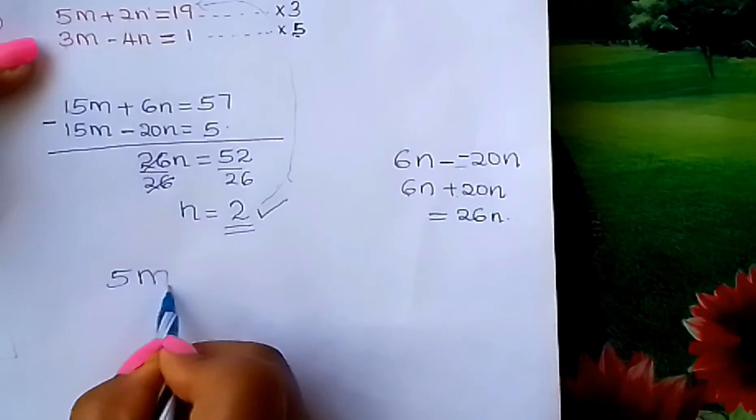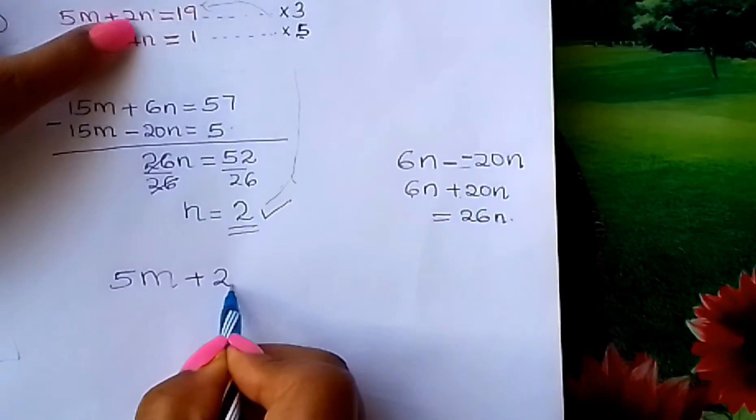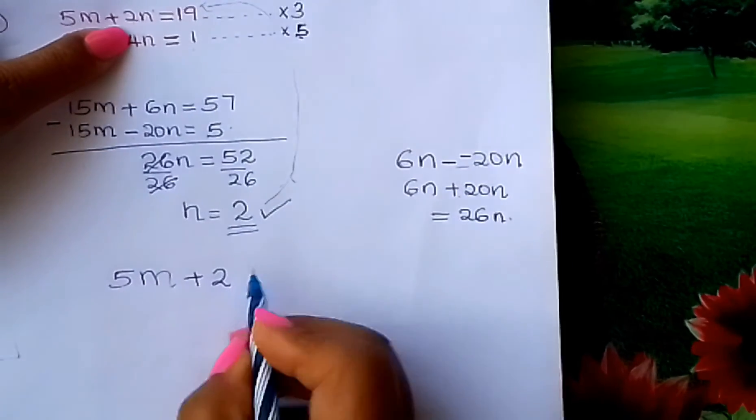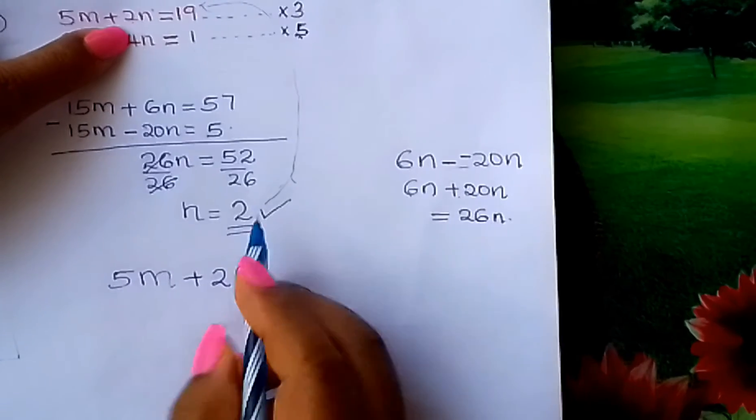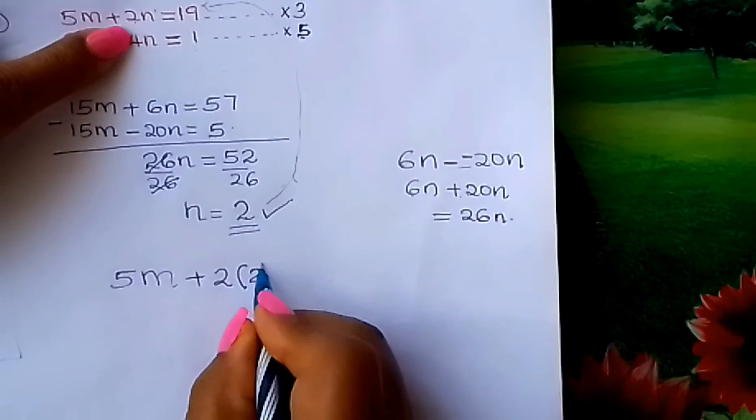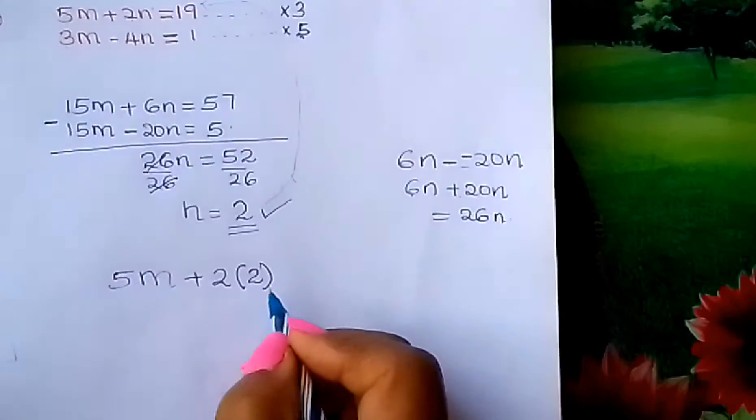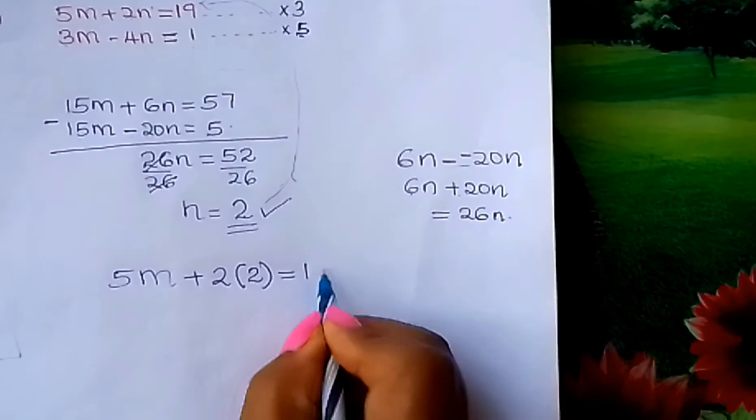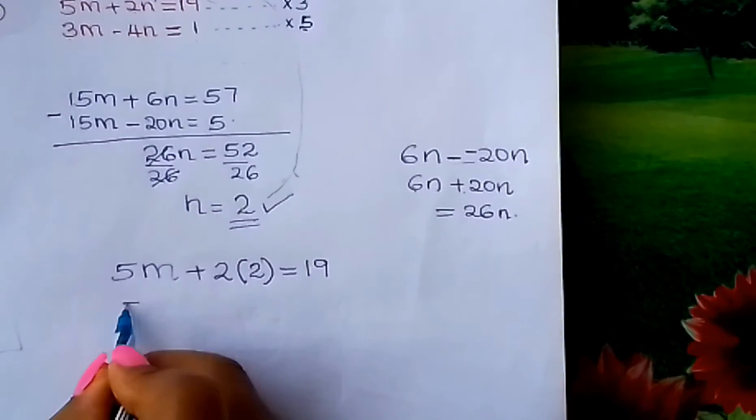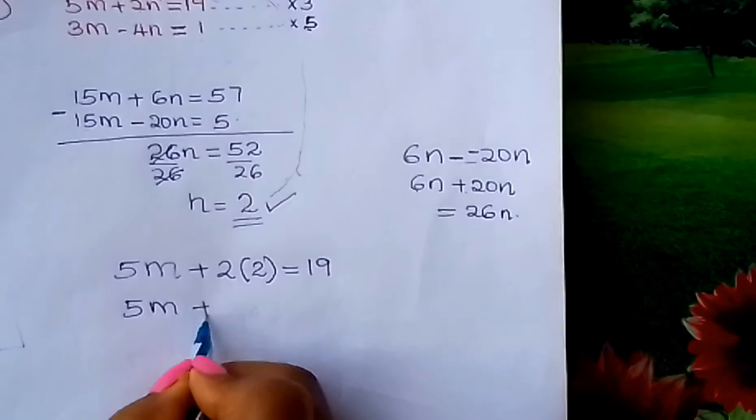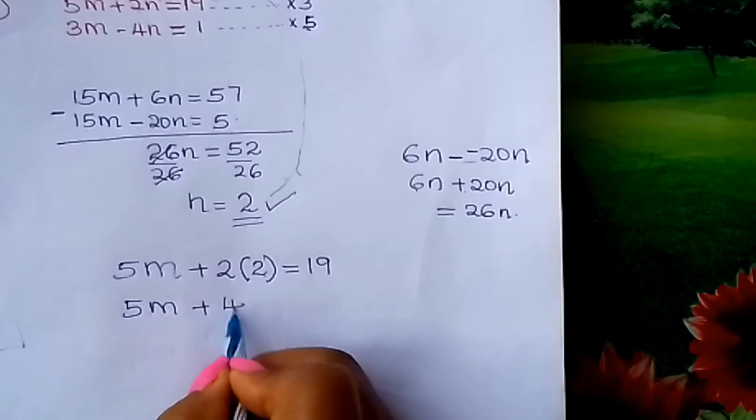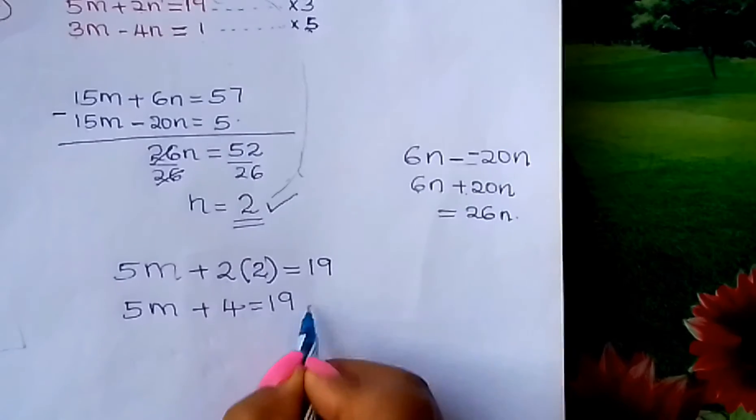You had 5M plus 2N. So where you have N now, you put your 2. Substitute your 2 where you have N. Therefore this equals 19. So we have 5M plus 2 times 2 is 4, which gives you 19.